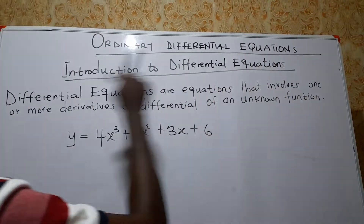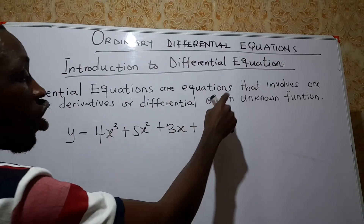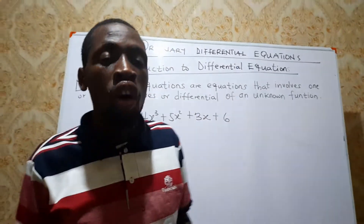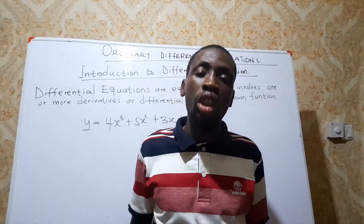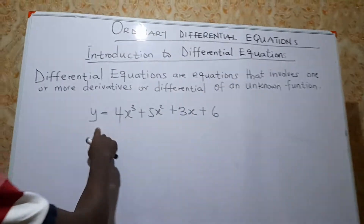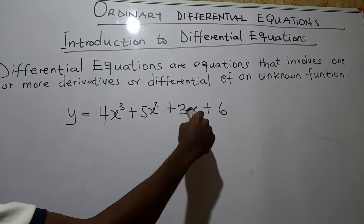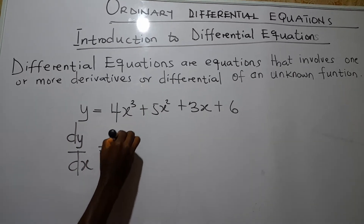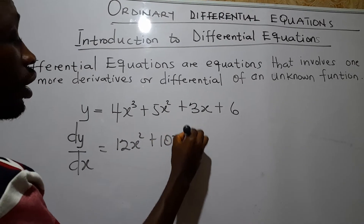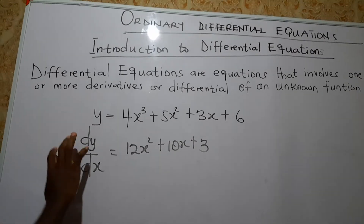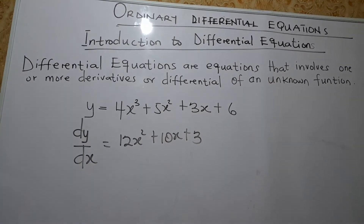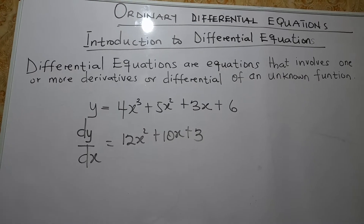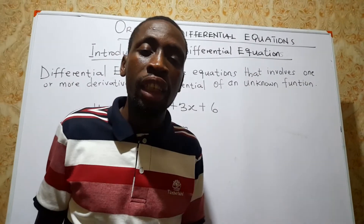Differential equations are equations that involve one or more derivatives or differentials of an unknown function. If you have an equation that involves a derivative or a differential of an unknown function, then that equation is called a differential equation. For instance, we have a function like y equal to 4s³ plus 5s² plus 3s plus 6, and we find dy/ds. dy/ds will equal 12s² plus 10x plus 3. This equation is now called a differential equation.